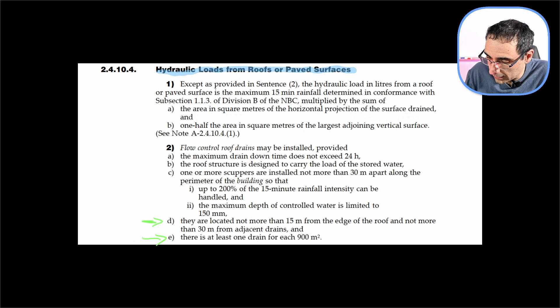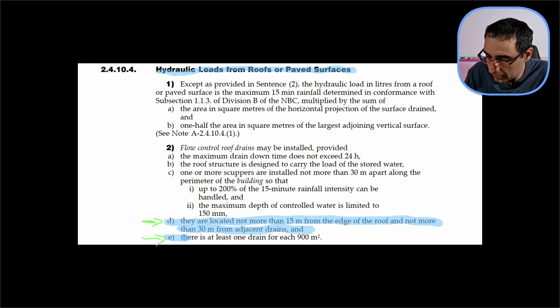This is the area of the code that actually says how hydraulic loads should be handled for roofs or paved surfaces. So that applies to flat roofs as well. I want to really focus on are these two points right here. This sentence D and this sentence E. Those are the two main ones that are ultimately going to dictate how many roof drains we need.